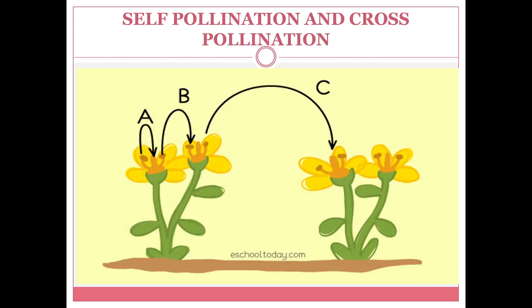We have also learnt about pollination. What is pollination, children? Transfer of pollen grains from anther to stigma is called pollination, and there are two types: self-pollination and cross-pollination. In self-pollination, pollen grains are transferred from anther to stigma of the same flower, or from one flower to another flower but on the same plant. Cross-pollination means transfer of pollen grains from one plant to another plant.